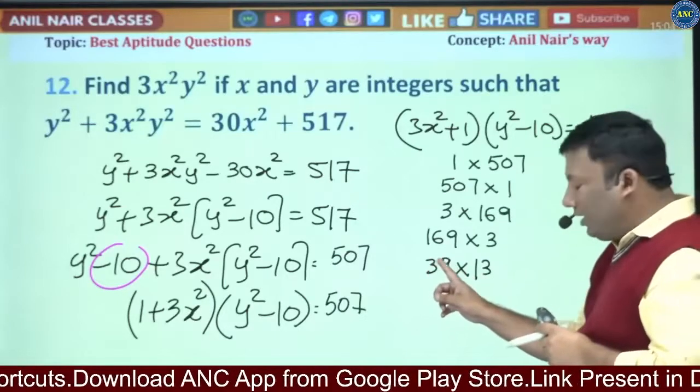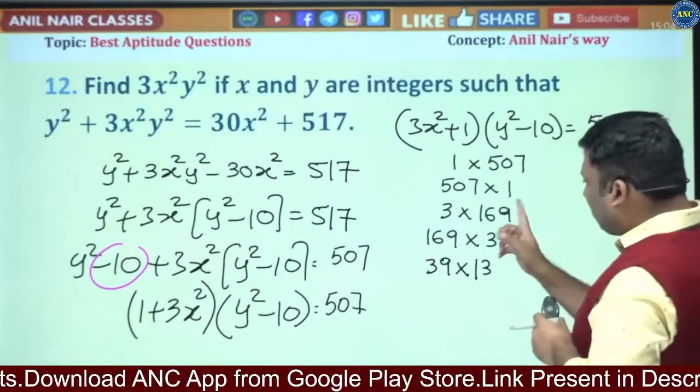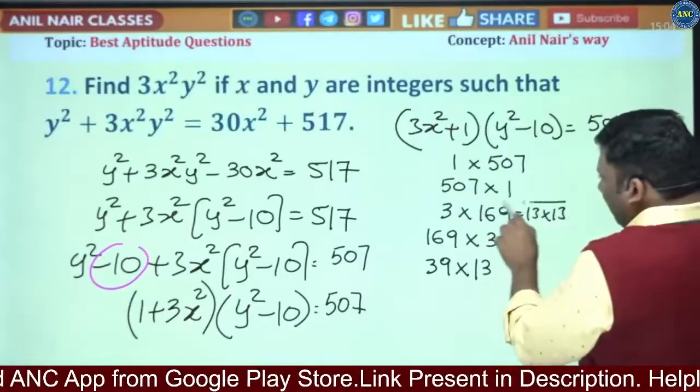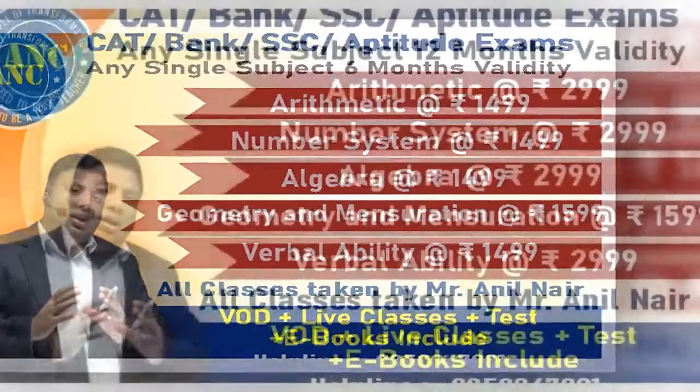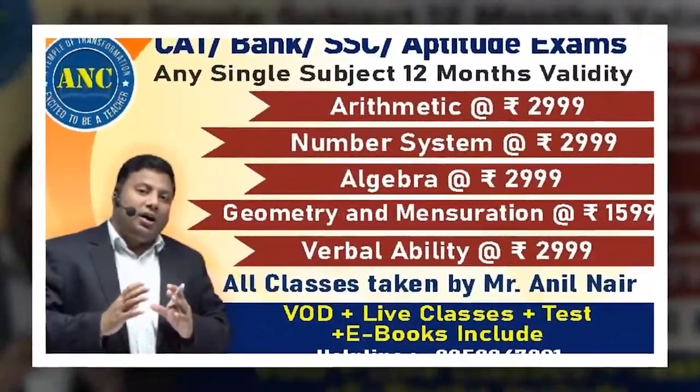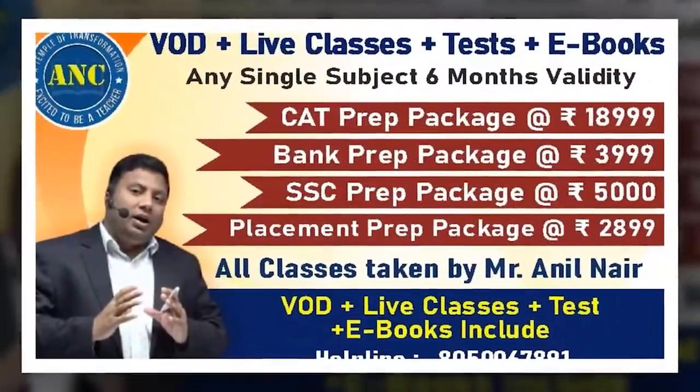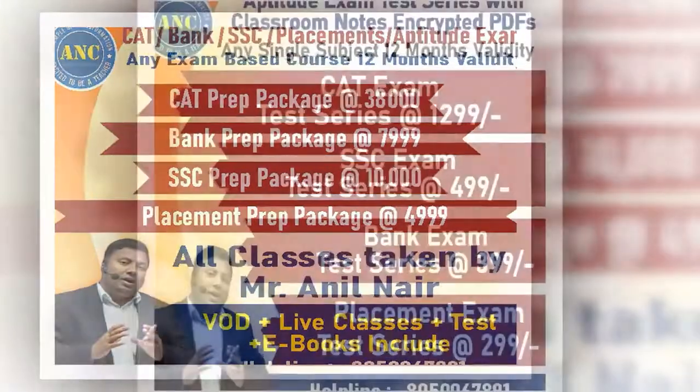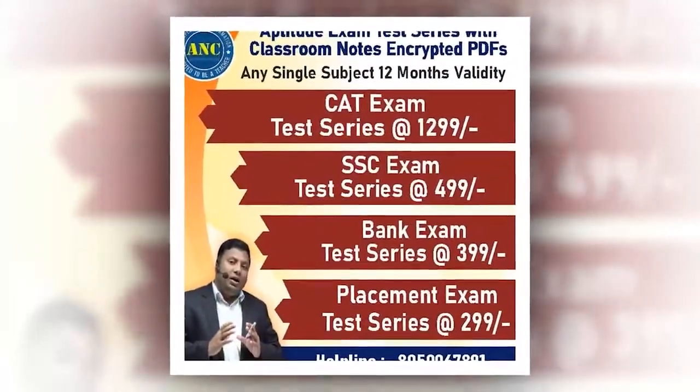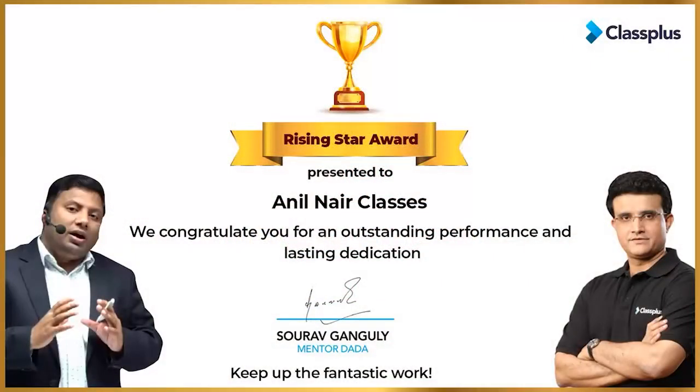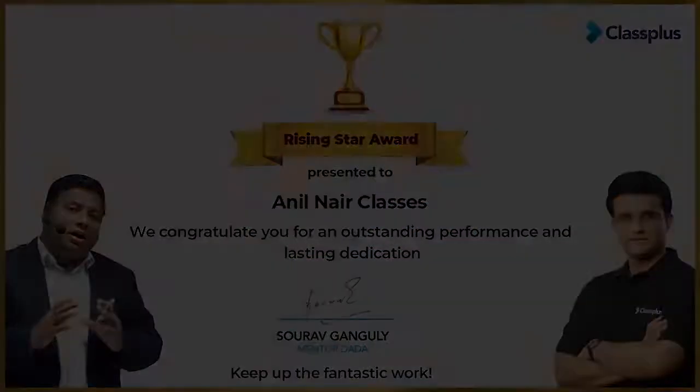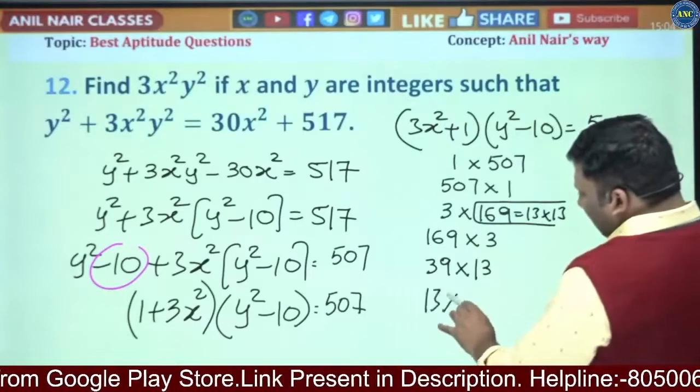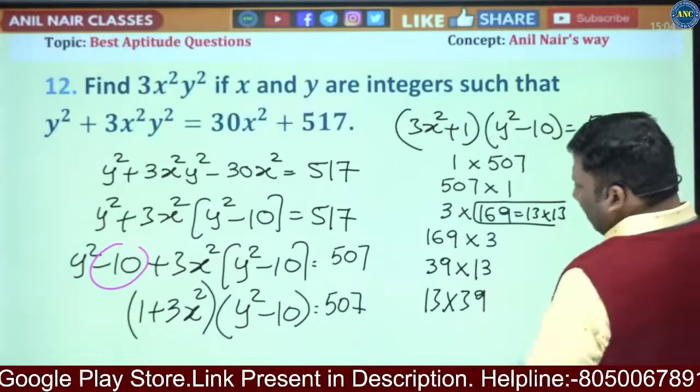169 × 3, so 169 can be written as 13 × 13. So 13 × 13... 13 × 39. And here it can be written as 39 × 13, reverse case.